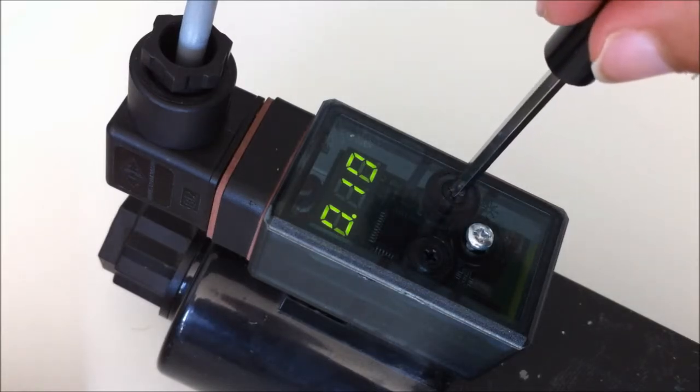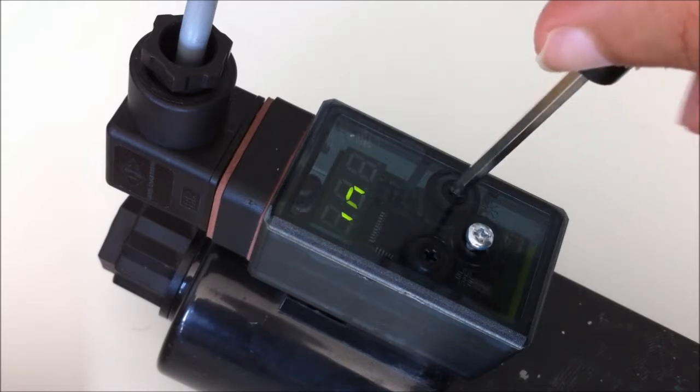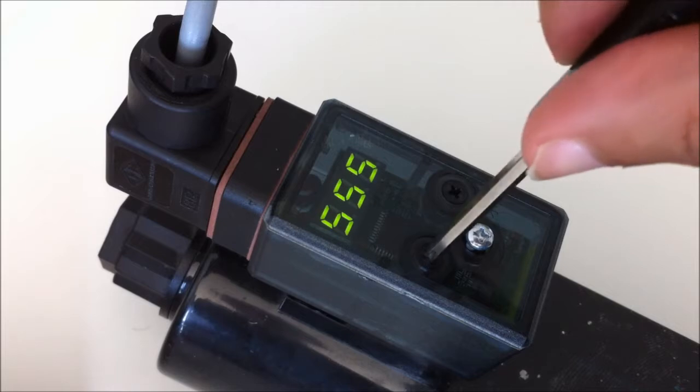To write the new settings to memory and return to normal mode of operation, rotate star until the display shows save, then rotate pound.